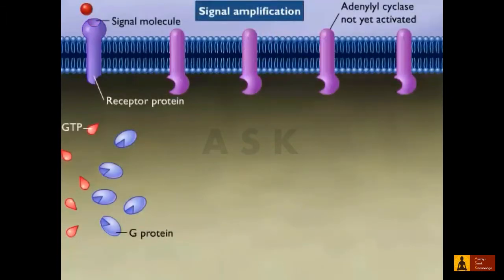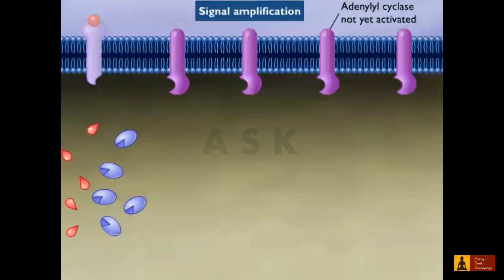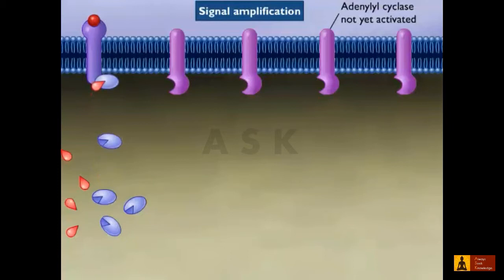Therefore, most enzyme-linked and G-protein-linked receptors use a chain of other protein messengers to amplify the signal as it is being relayed.